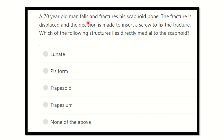Here the question is: a 70-year-old man falls and fractures his scaphoid bone. The fracture is displaced and the decision is made to insert a screw to fix the fracture. Which of the following structures lies directly medial to the scaphoid? This is a long question but the key point is very short.